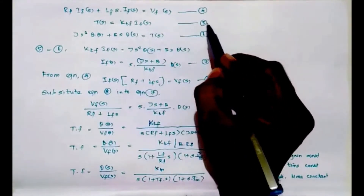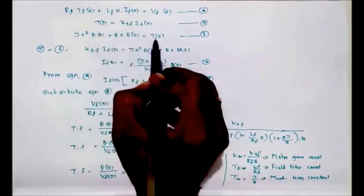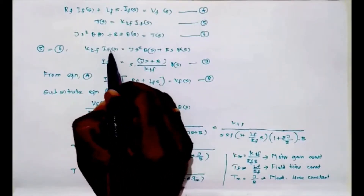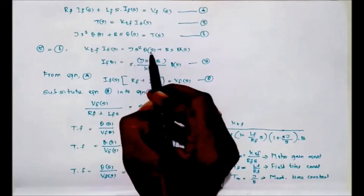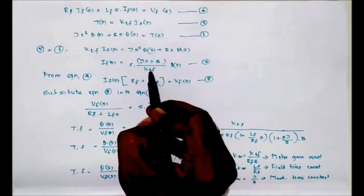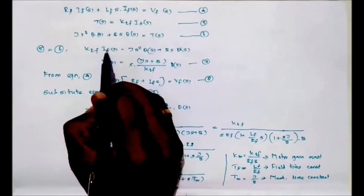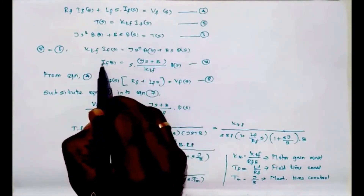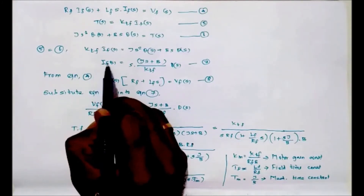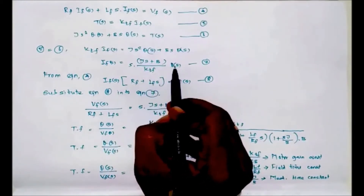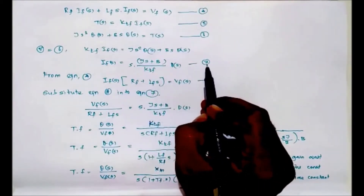From equations five and six the torques are equal, so we equate them to find If(S). Taking S and θ(S) common, and factoring out (JS + B), we get: If(S) = S·(JS + B) / Ktf · θ(S). We consider this as equation number seven.